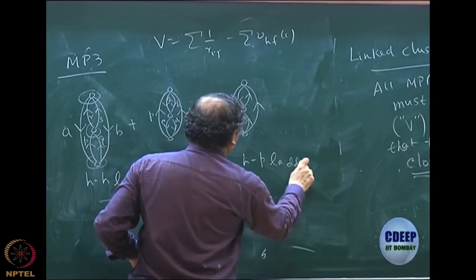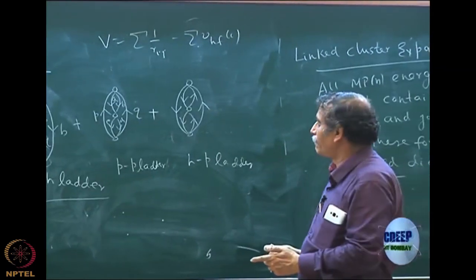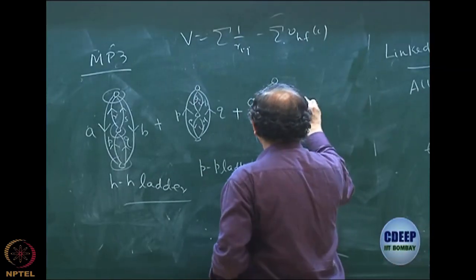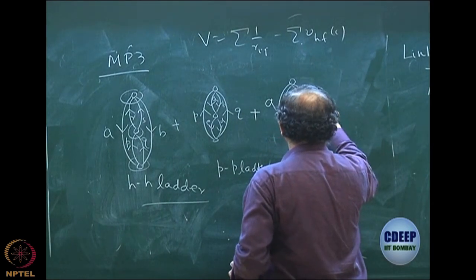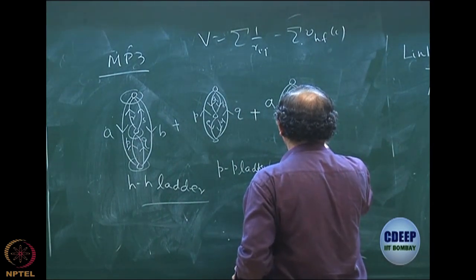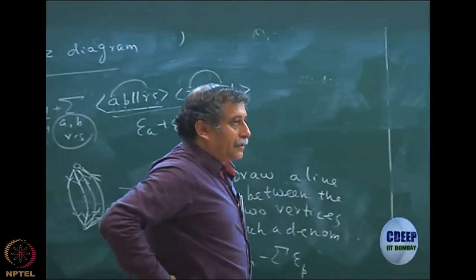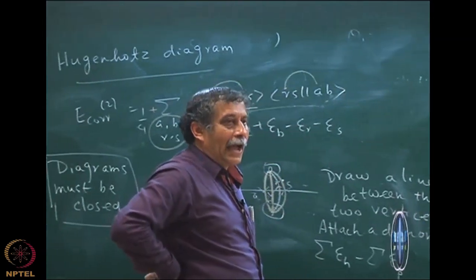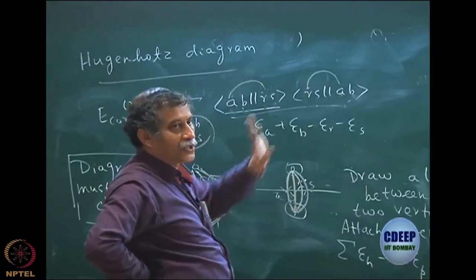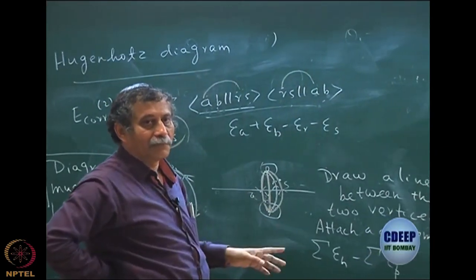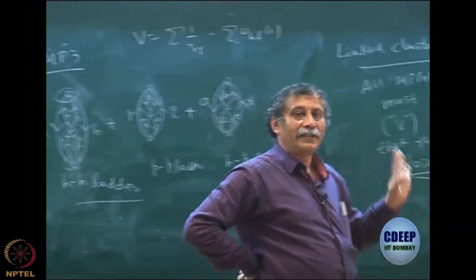And this third one is called the hole-particle ladder, HP ladder, because the ladder itself has one hole and one particle. So labeling: A, R, B, S, C, T — giving three hole lines and three particle lines. I can now apply my rules to write the expression for each of them, and their sum becomes your MP3 energy.